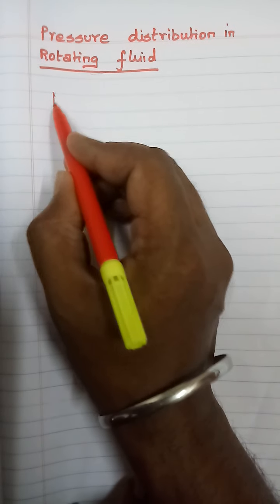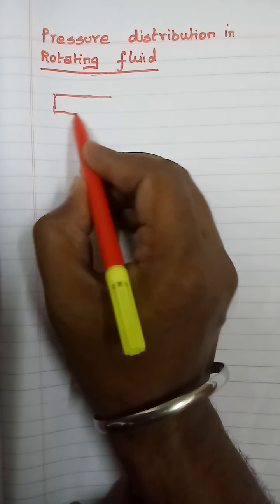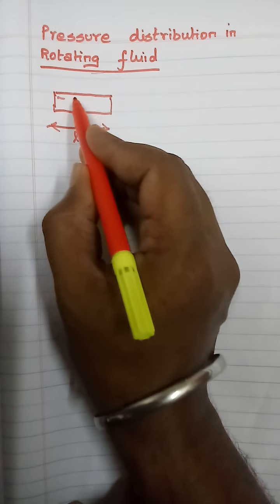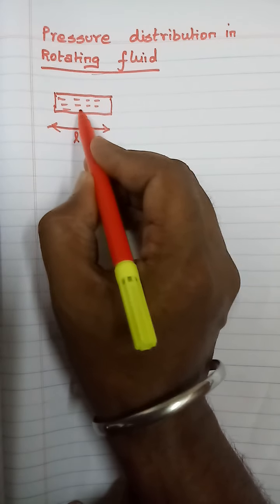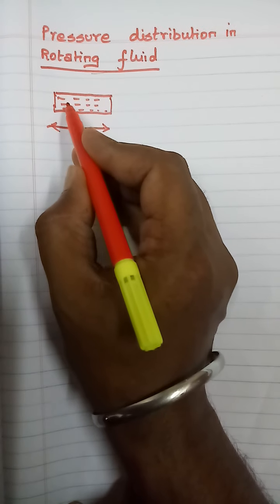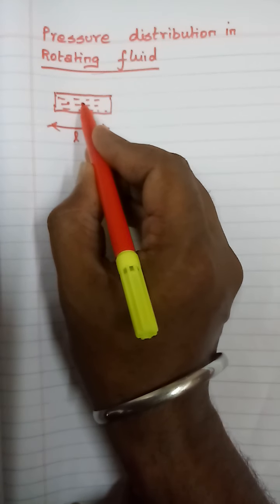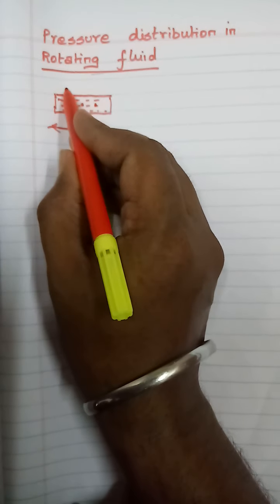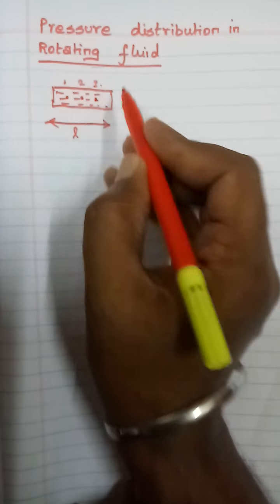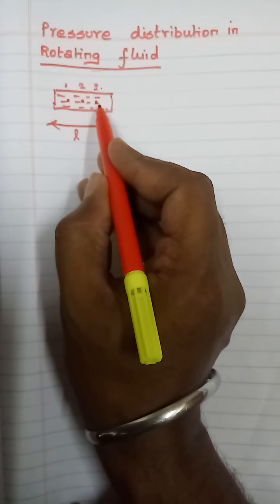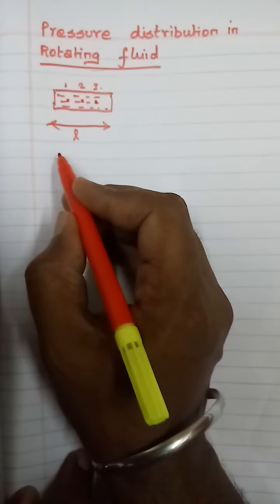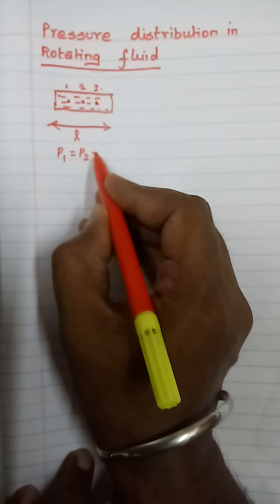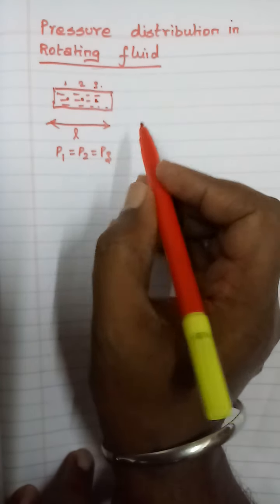Consider a tube of length L containing some liquid inside. If you take 3 points at the same horizontal level, let me name them as 1, 2, 3. Calculating the pressure at these 3 different points will give the same answer: P1 is equal to P2 is equal to P3.